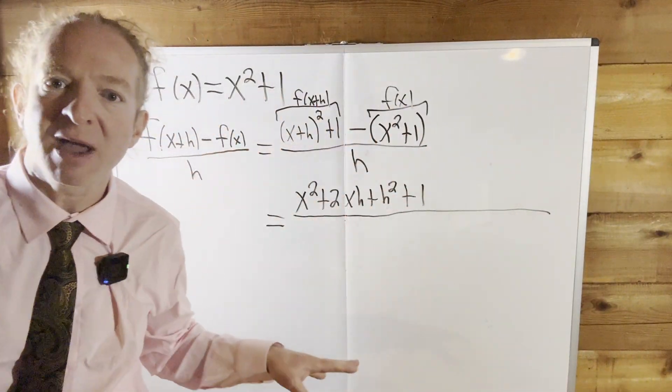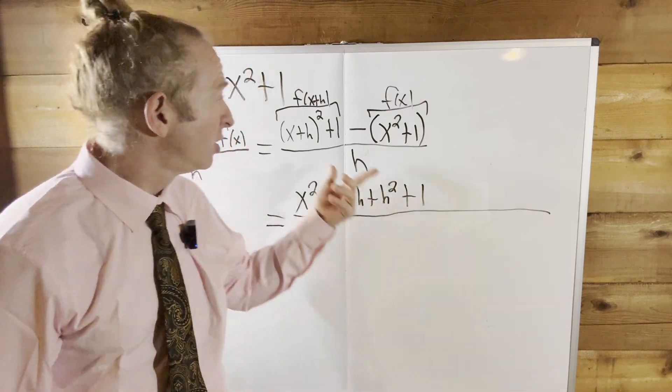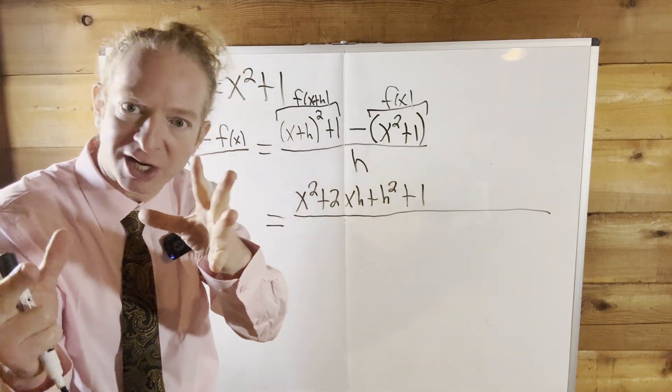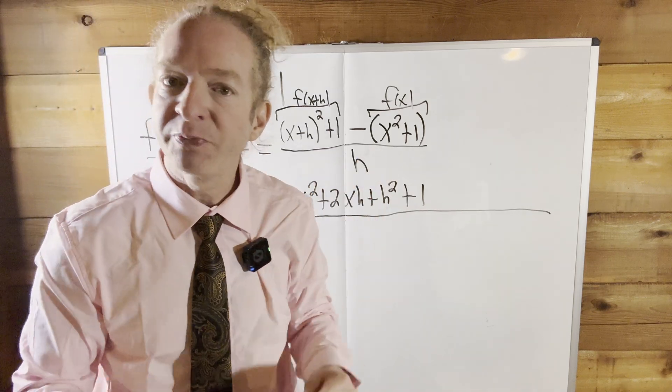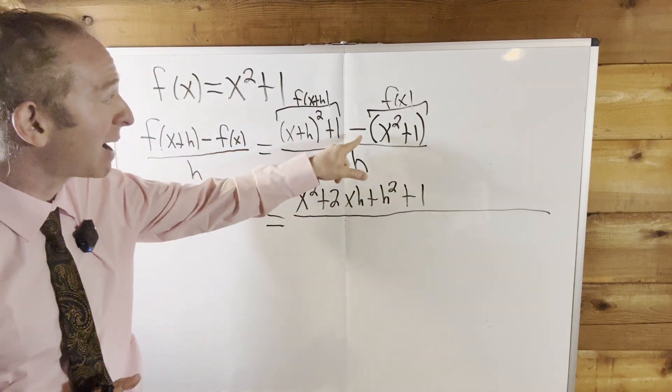Memorize it, right? Just commit it to memory. Certain things in mathematics should just be memorized. You can easily multiply this out. You can write it twice. x plus h times x plus h. You can distribute or foil however you do it. And you will get this, right? Guaranteed 100%. Minus!